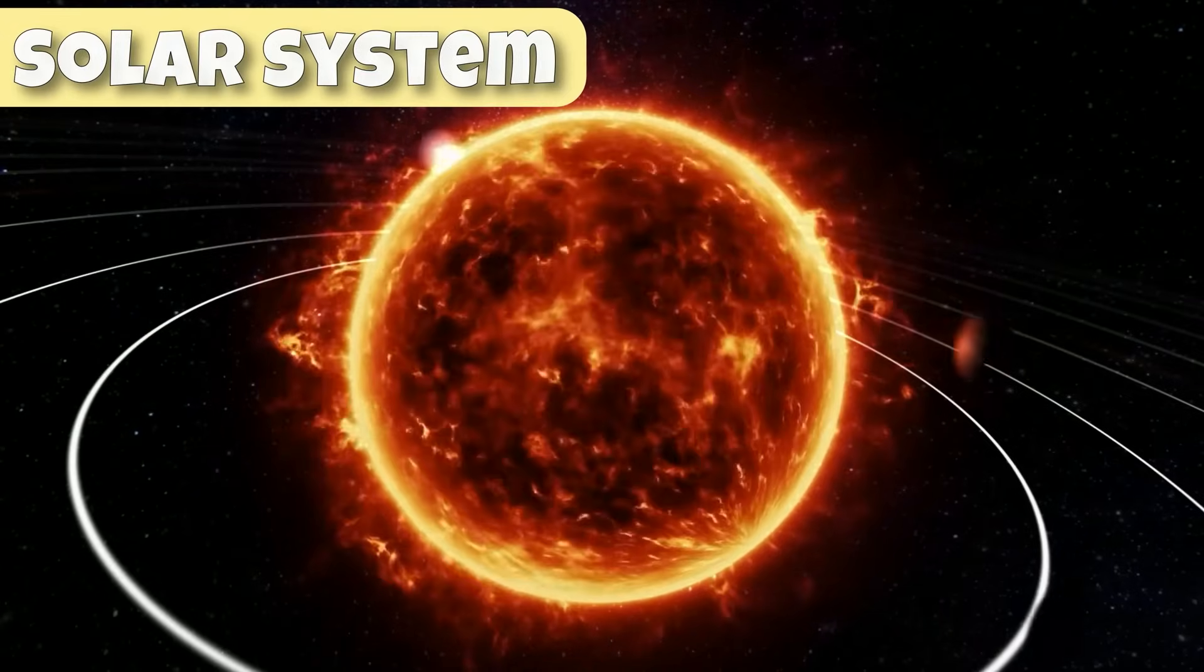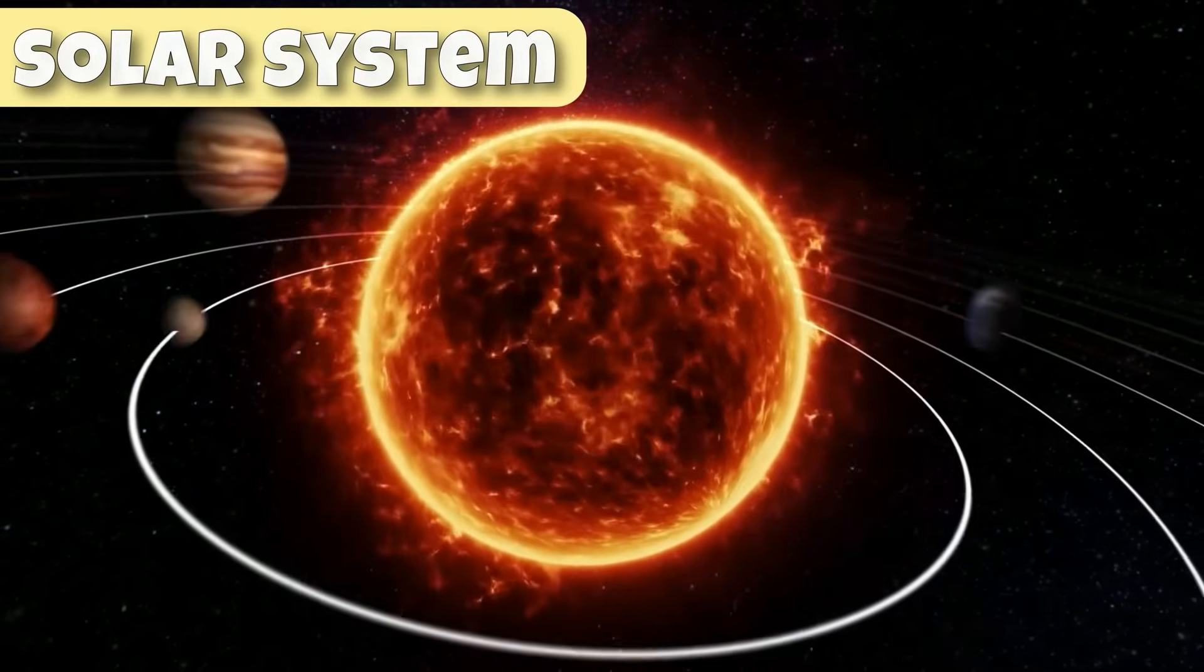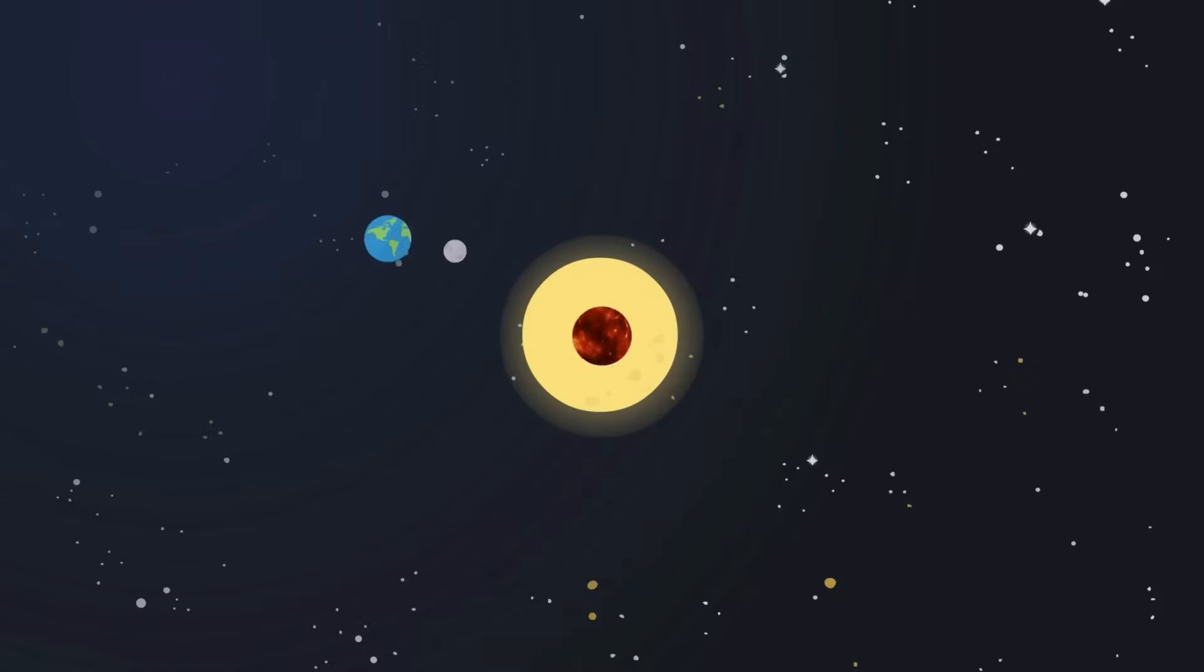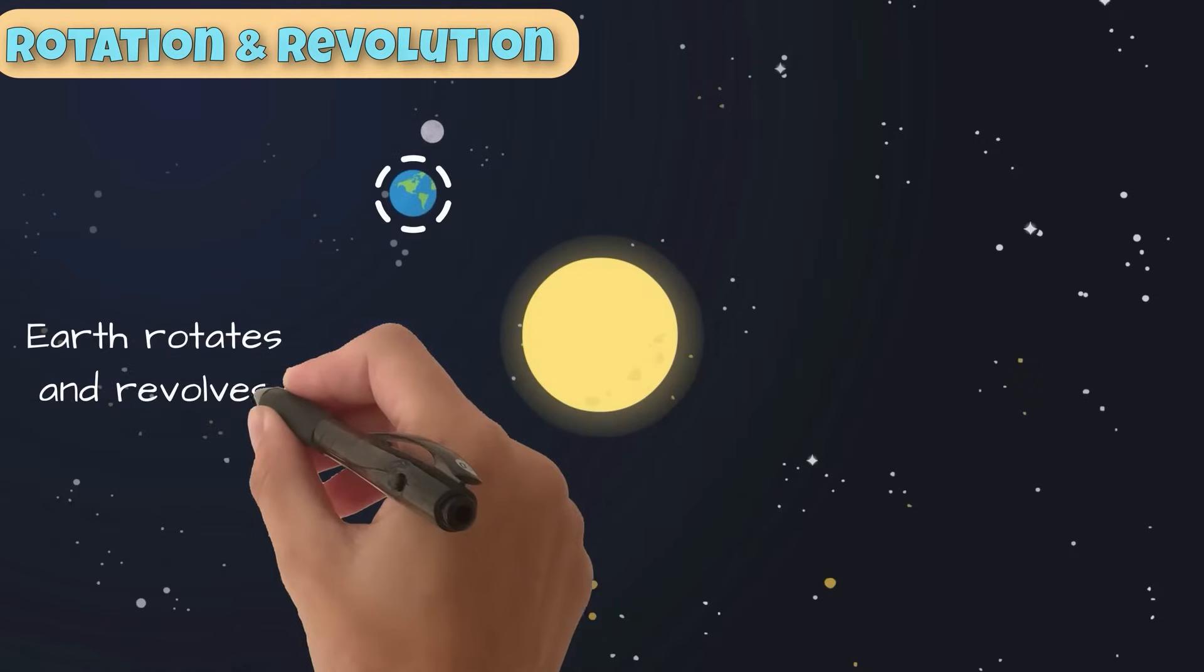Within our solar system, we know that the force of gravity keeps all planets orbiting around the sun. The Earth is constantly rotating on its axis and revolving around the sun.